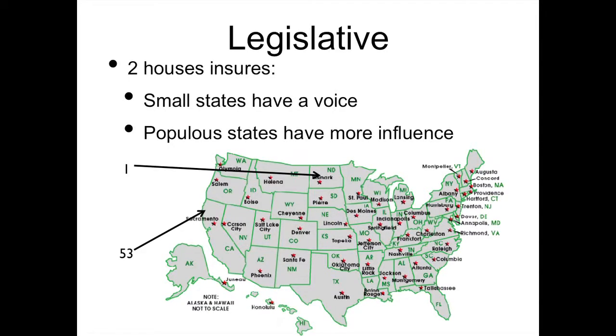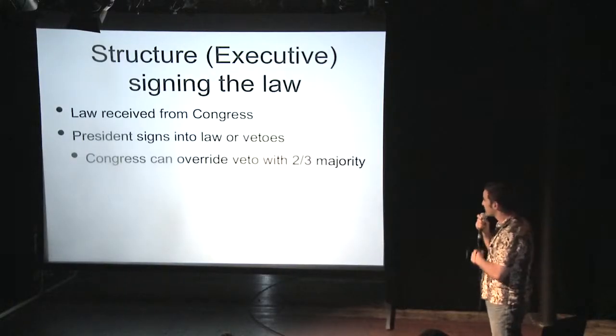Every state represented here will have two senators, no matter how many people you have. But then North Dakota, which has a very small population, is going to have one rep, and California has three. Laws are received from the Congress, and then the president signs them into law or vetoes, and then Congress can override that veto with a two-thirds majority. This is how the president is kept in check by the legislative branch.